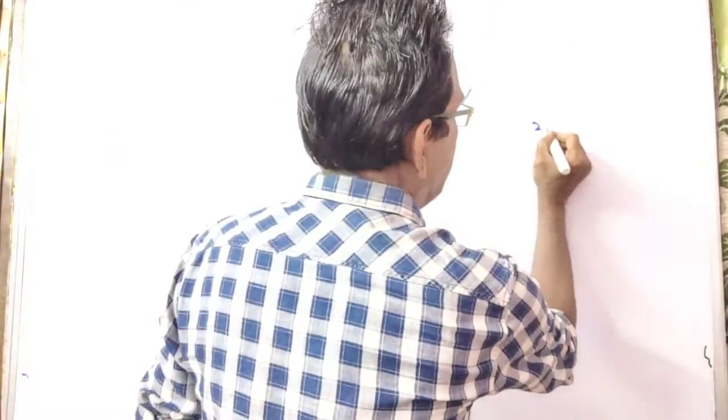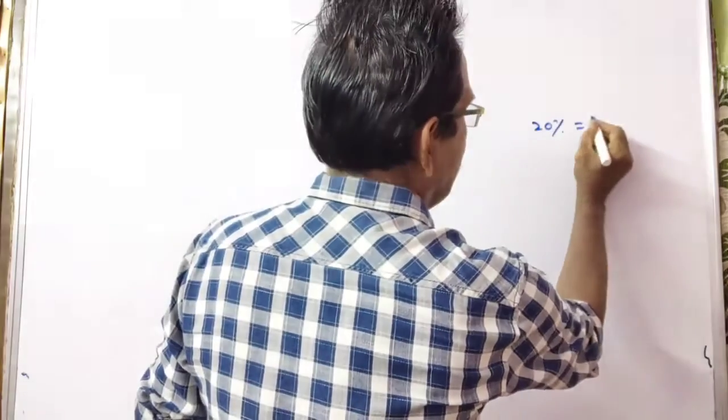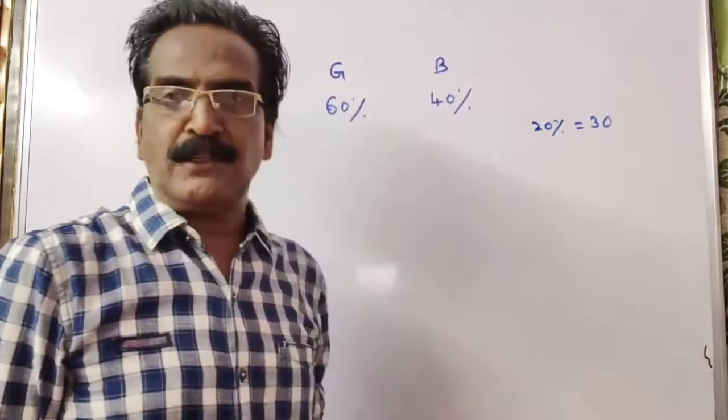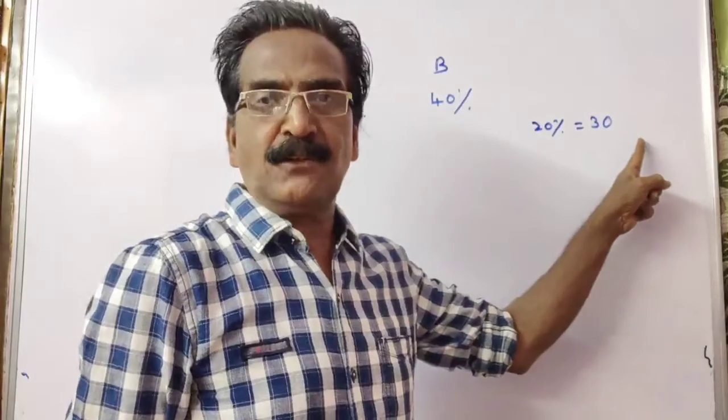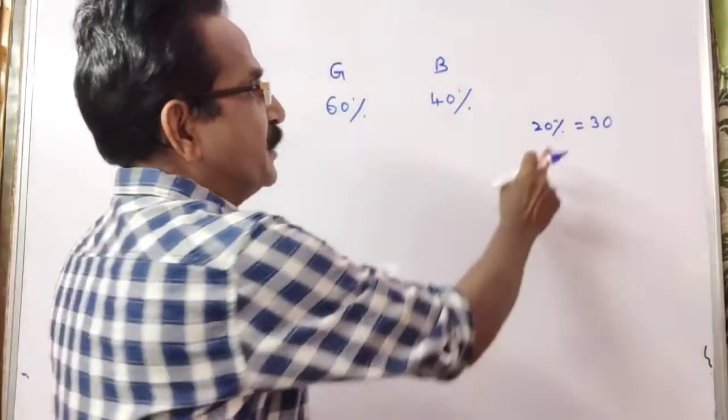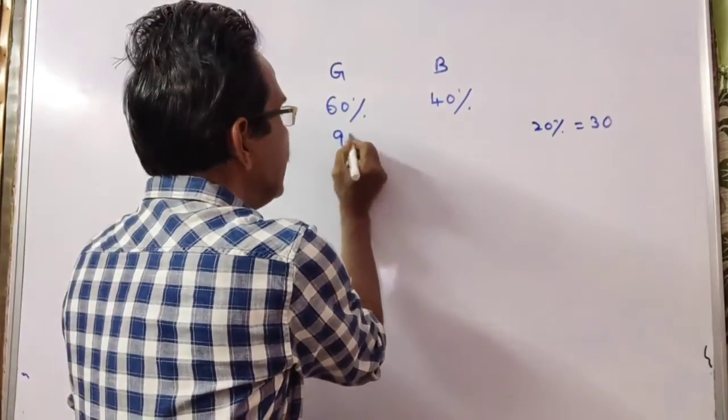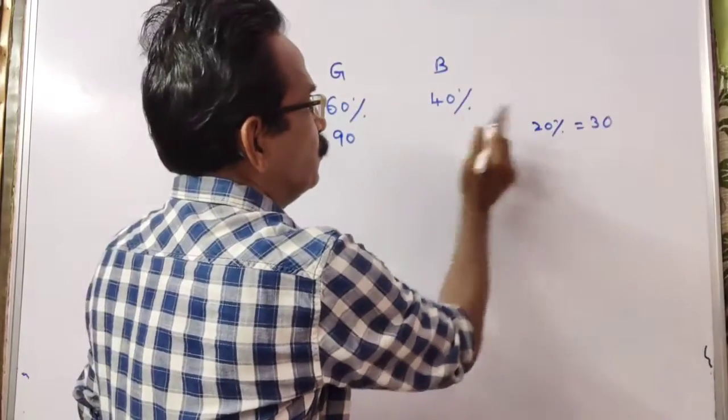So, 20% is equal to 30. If 20% is equal to 30, 60% is equal to 90 and 40% is equal to 60.